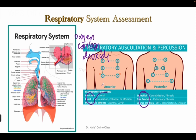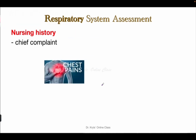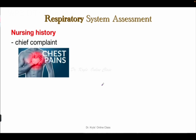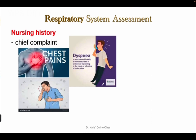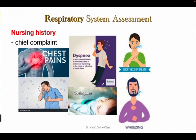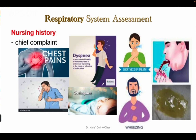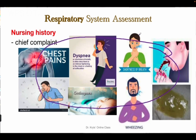We'll start with the nursing history. The nurse asks the patient about the chief complaints — that's really important. A patient with a respiratory disorder may report the following signs and symptoms: chest pain, cough, dyspnea or orthopnea, shortness of breath, and wheezing. The patient may also report hemoptysis, increased sputum production, or a change in the characteristics of the sputum. These are the possible chief complaints from our patient.